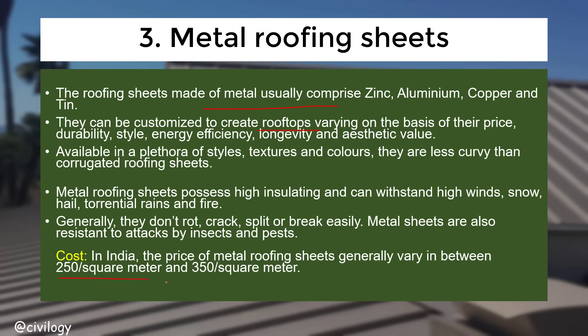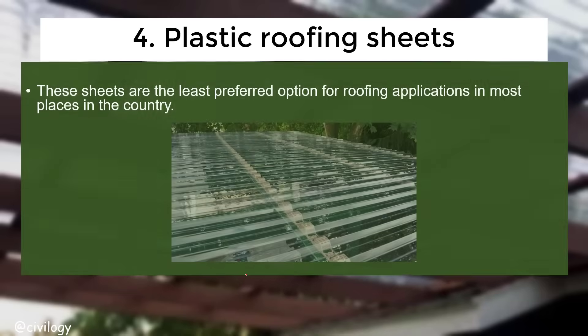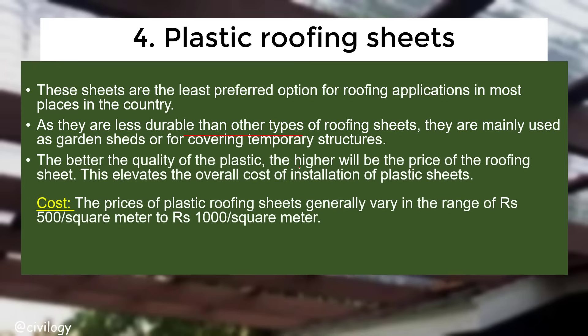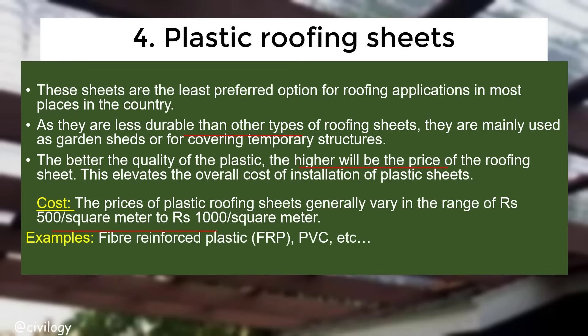The price of metal roofing sheets in India generally varies between 250 to 350 per square meter. Plastic roofing sheets are the least preferred option in most places as they are less durable. They are mainly used for garden sheds or temporary structures. Prices generally vary between 500 to 1000 per square meter. Examples include fiber reinforced plastic (FRP) and PVC.